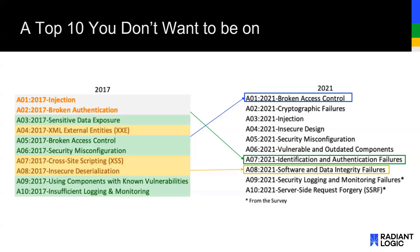Some things may become more prevalent and less prevalent as fixes are made and the state-of-the-art changes. You can see some of these changes highlighted — for instance, broken access control moving from number five to number one, and broken authentication coming down a bit and changing its name. But we see that this is evolving, and it really tries to hammer home the things we should be focusing on.